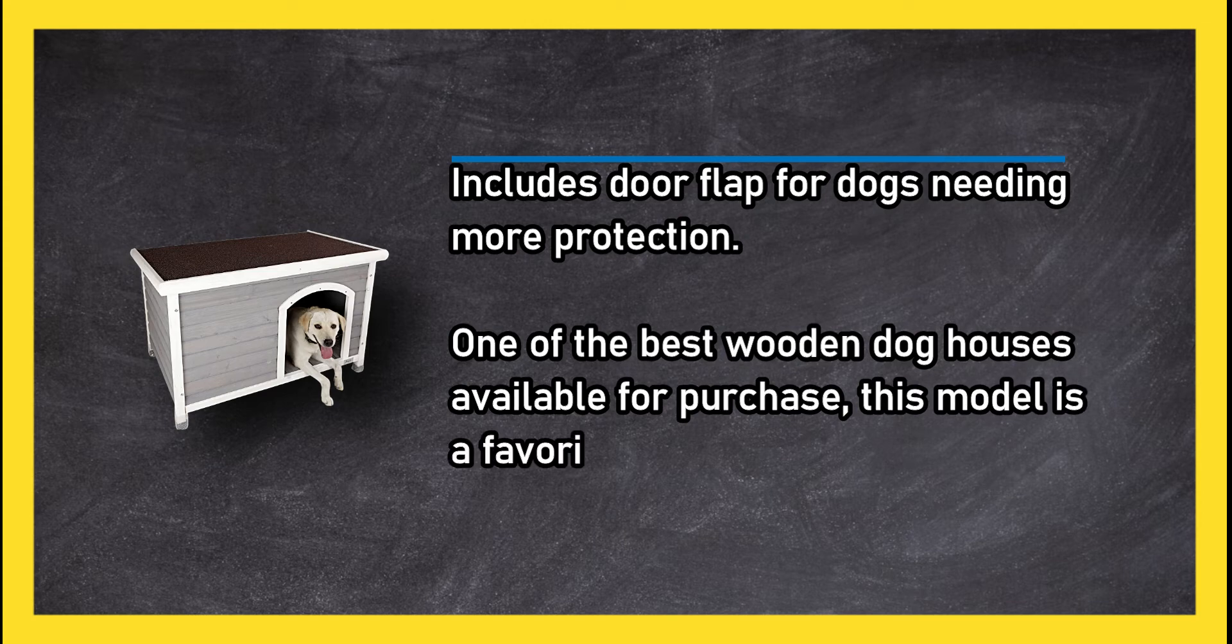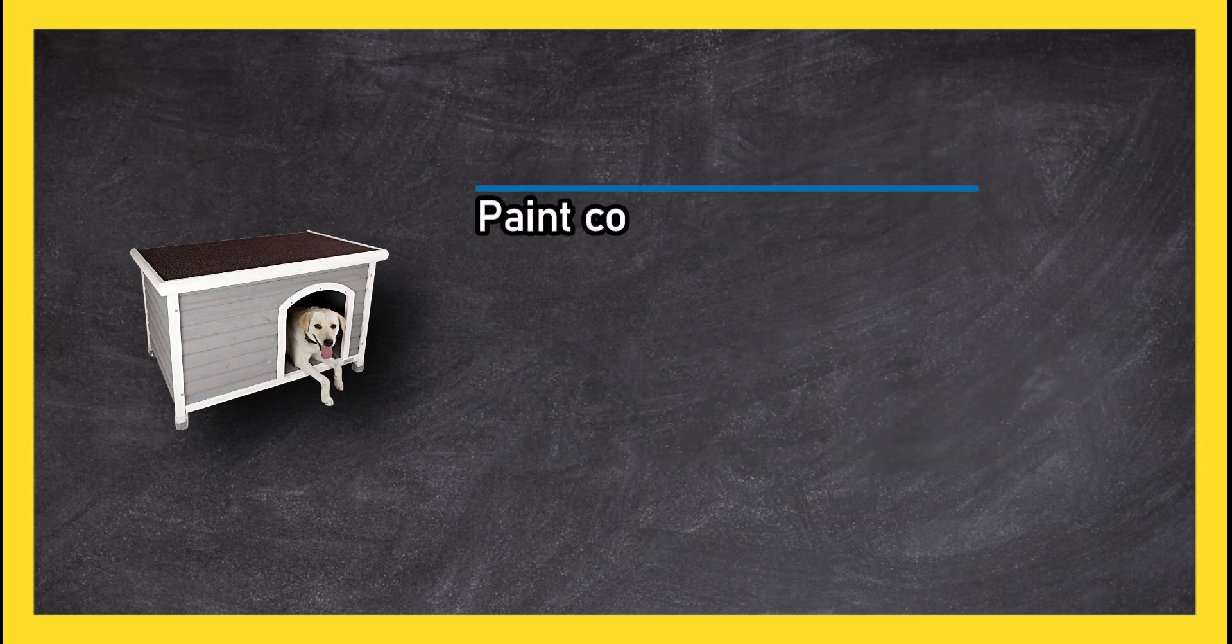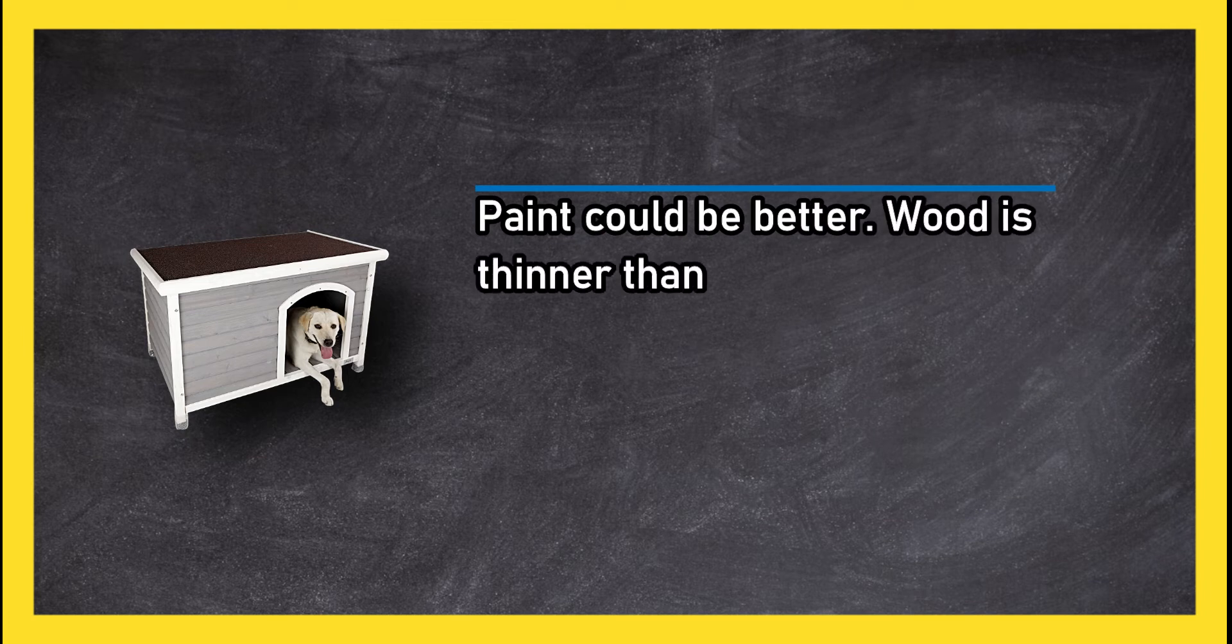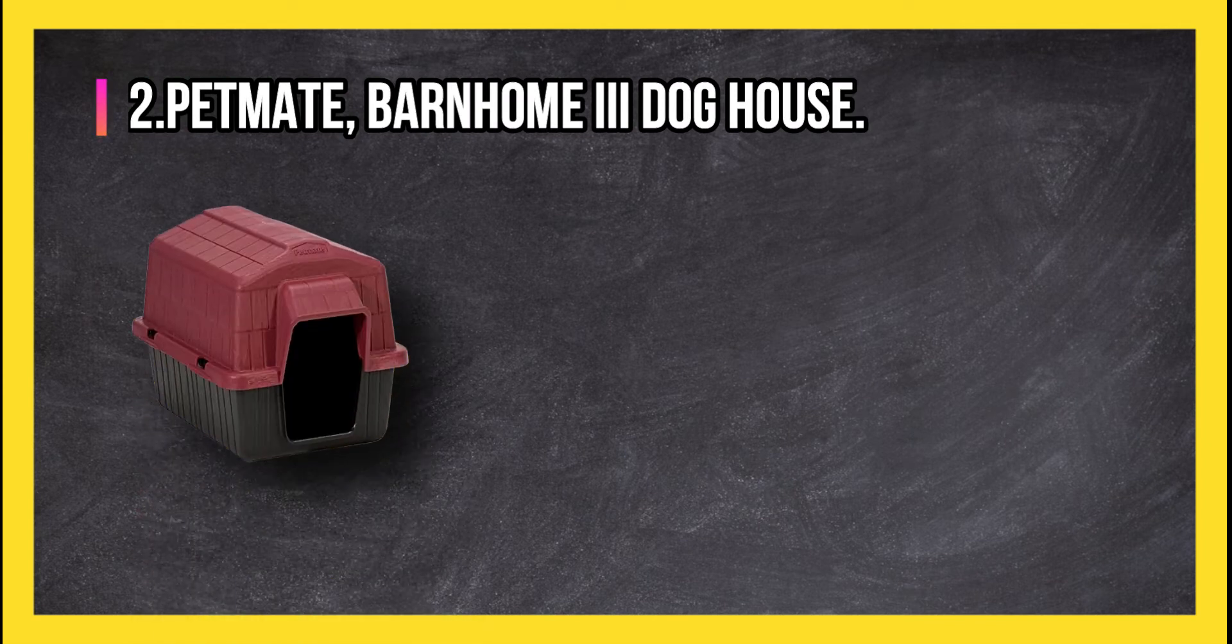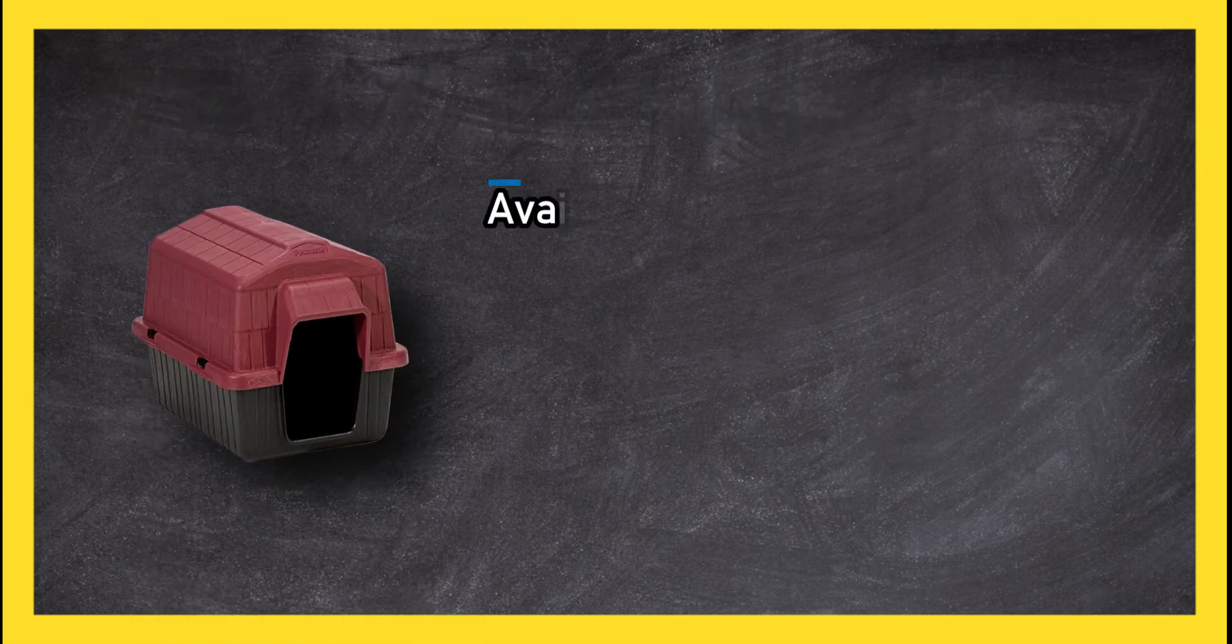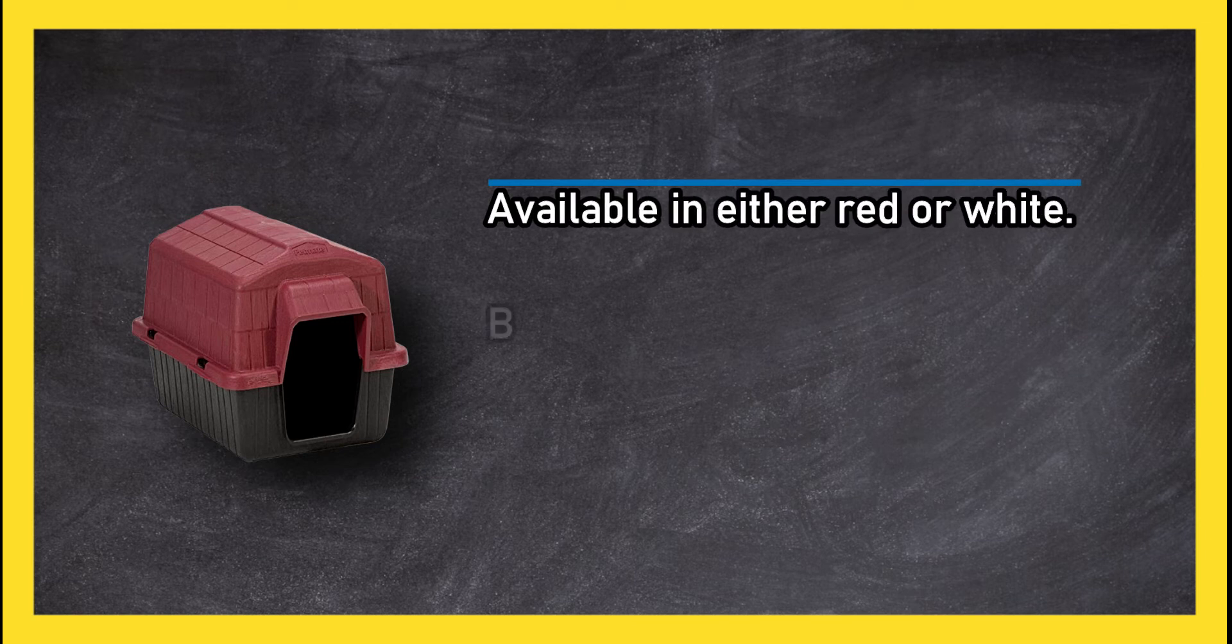This model is a favorite for its barn home feel. Paint could be better. Wood is thinner than some customers expected. At number two: Pet Mate Barn Home Three Dog House, available in either red or white barn shape, offers weather protection for your pup.